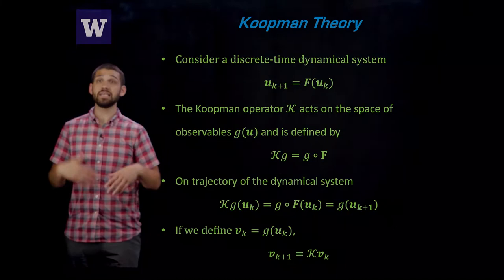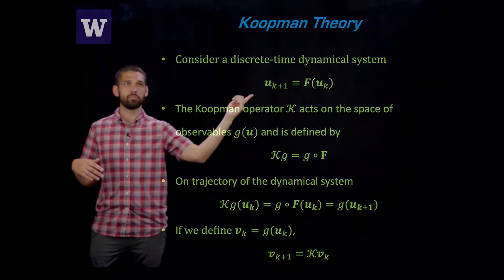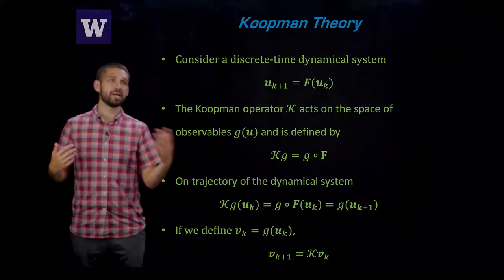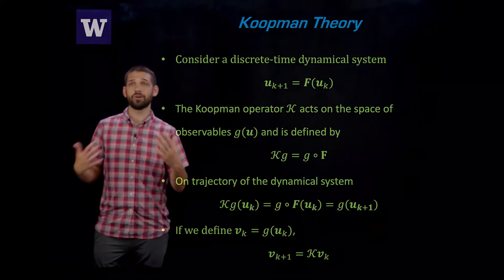So one question you might have is, if you have a nonlinear PDE, how do we know whether there is a transformation that will linearize it? Well, here we can appeal to Koopman theory. So let's say that we have a discrete time dynamical system where our state variable is U. In our case, this is just going to be a discretized PDE. The Koopman operator K doesn't act on the state variable itself, but on the space of observables or functions of U. And it's just the composition operator.